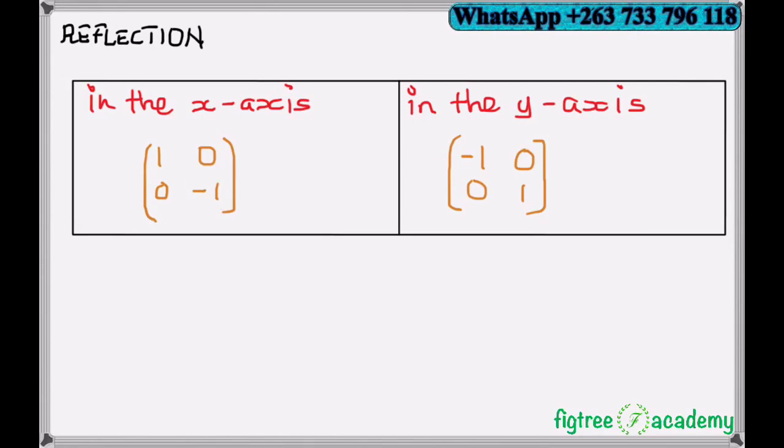When reflecting in the y-axis, where the y-axis is the invariant line, we use minus 1 on the upper row: minus 1, 0, 0, 1.